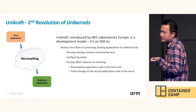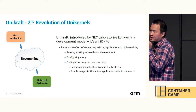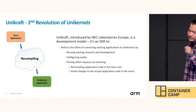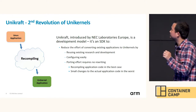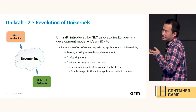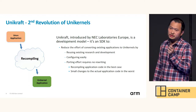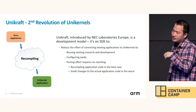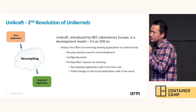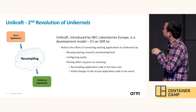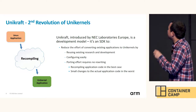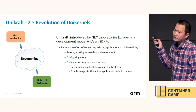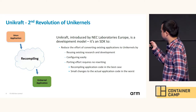In the best case, we can just recompile our code with UniKraft to convert our application to a UniKernel. In other cases, you just need some small changes to the existing code, then use the UniKraft toolchain to compile the code and produce a UniKernel application. Using recompilation instead of rewriting is a big change.